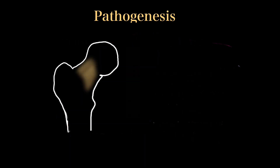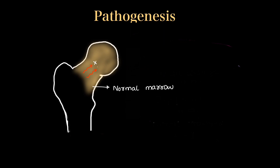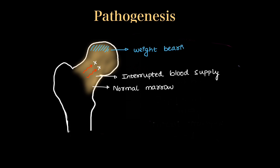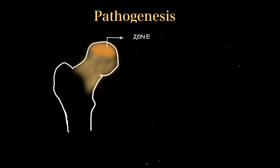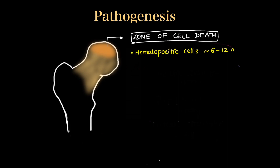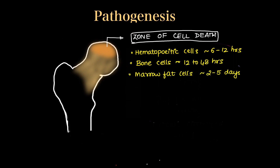So what happens in avascular necrosis? The femoral head and neck has normal fatty marrow, and when blood supply is interrupted by one of the causes discussed, the weight-bearing area of the head shows reduction in blood supply with a zone of cell death. In this zone, different cells have their own timeline of death: hematopoietic cells die earliest within 6 to 12 hours, bone cells take 12 to 48 hours, and marrow cells survive up to 2 to 5 days.